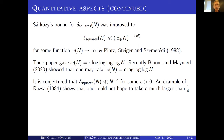In the other direction, an example of Ruzsa shows that you can't hope to get c to be too large — he gives an example of a set of size about n^{3/4} with no square difference.